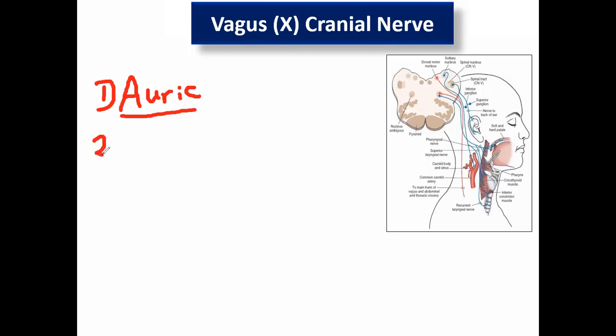Once the vagus is stimulated: bradycardia until the heart stops. This is also the vasovagal attack — most of us complain from vasovagal attack due to any reason, including psychogenic causes: hypotension, falling on the ground, maybe bradycardia, maybe stopping the heart. This is the first branch — the auricular branch.